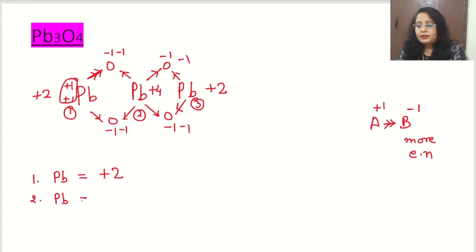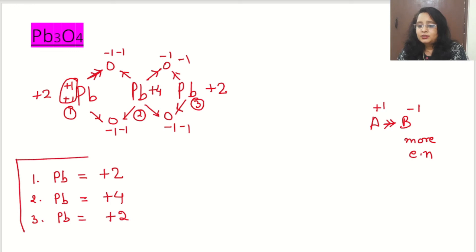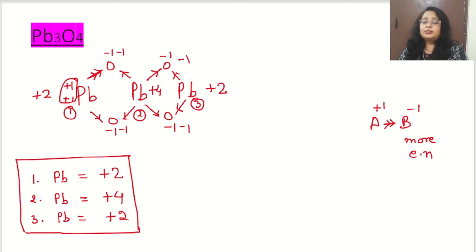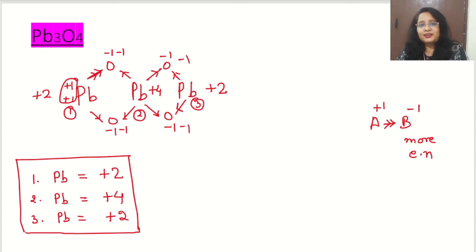So, lead number 1 has oxidation state +2, lead number 2 has oxidation state +4, and lead number 3 has oxidation state +2. The oxidation states of lead in lead tetroxide are +2, +4, and +2. Remember this exceptional case — this question is asked very often. If you draw the correct structure, you will get the correct answer. Keep studying, thank you.